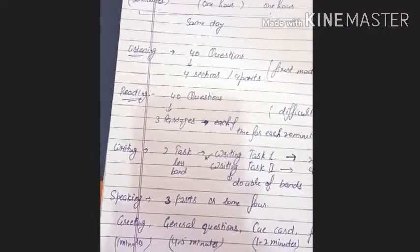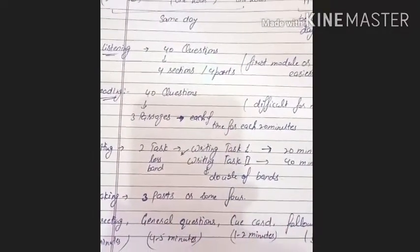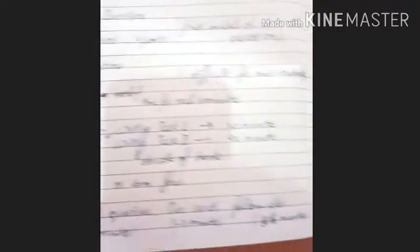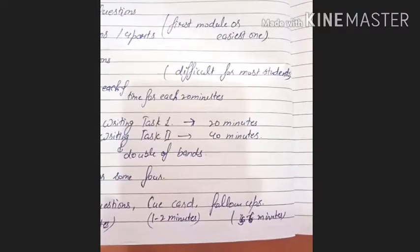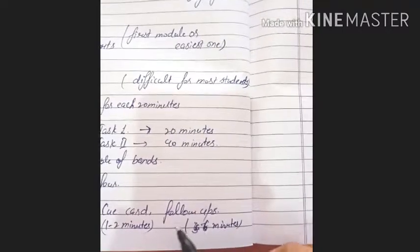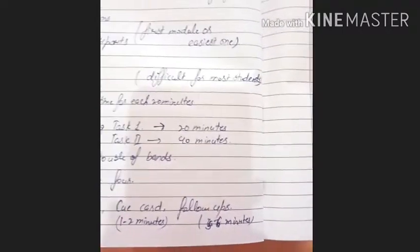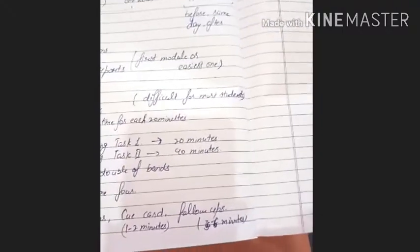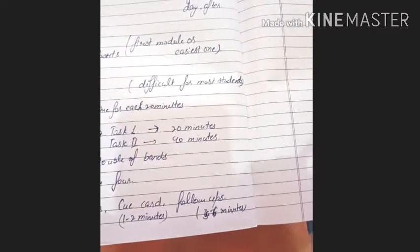Greeting lasts for 1 minute. General questions are 3 to 4 minutes or 4 to 5 minutes. Sometimes 3 to 4 minutes is maximum for this. And cue card is 1 to 2 minutes. We have to speak around 1 to 2 minutes for this. And there are follow-ups that last for 5 to 6 minutes where we have questions regarding the cue card.